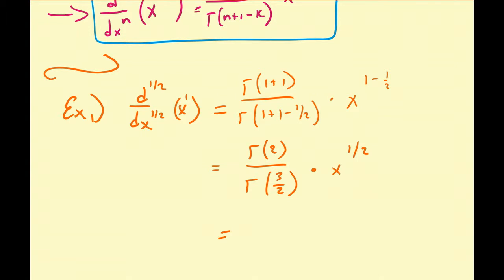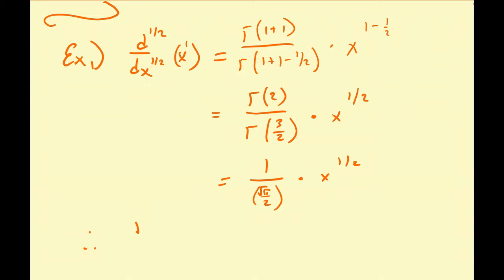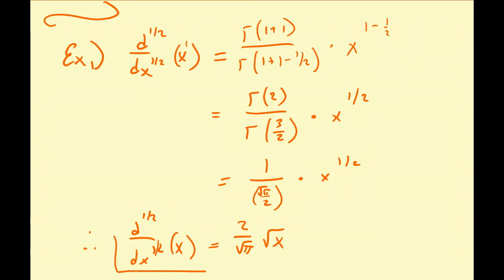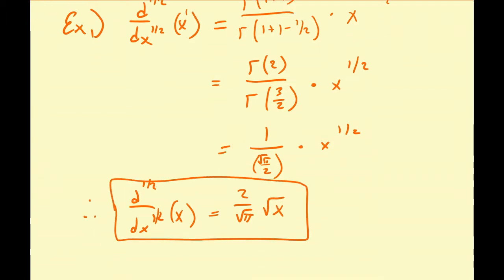Gamma of 2 is equal to 1. And gamma of three-halves — this is a special relationship you may know — is equal to the square root of pi over 2. Some people memorize this as the one-half factorial. So times x to the one-half. Therefore, the one-half derivative of x with respect to x is equal to 2 divided by the square root of pi times the square root of x.